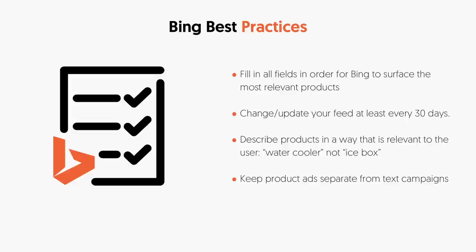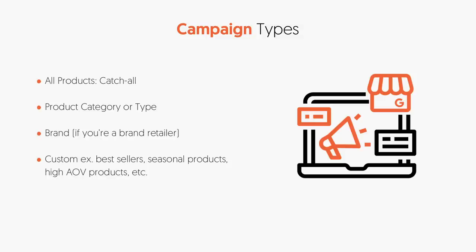Some best practices: fill in all the fields so Bing can surface the most relevant products. Update your feed at least every 30 days — ideally weekly. Use Ubersuggest to describe your products with the most relevant terms; check whether people search 'water cooler' or 'icebox' and use whichever is more popular. Keep product ads separate from text campaigns so you can see how each is performing. You can run campaigns for all products, specific categories, your brand, or even competitors' brands if permitted.